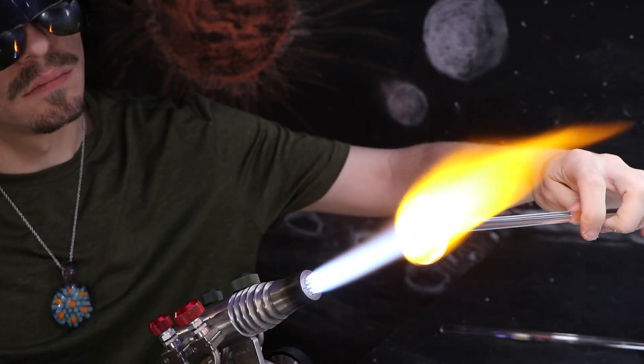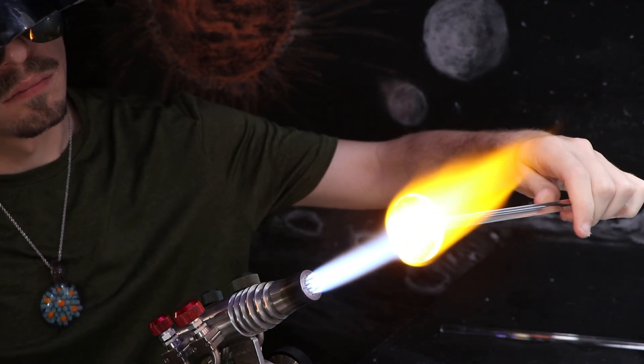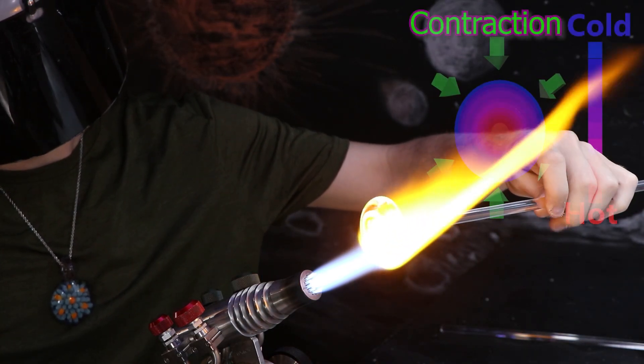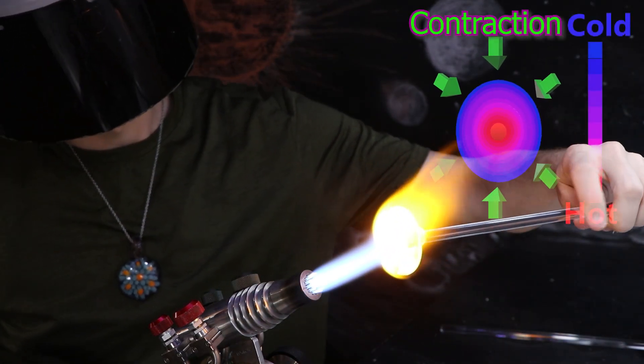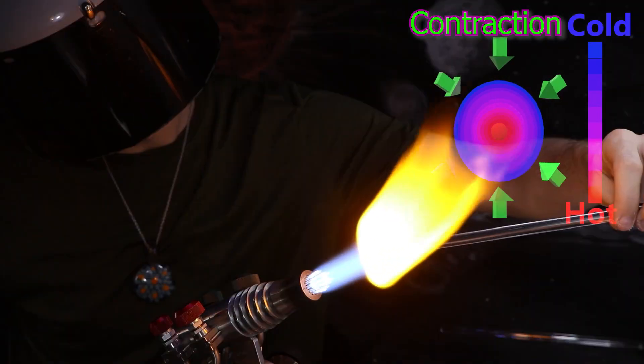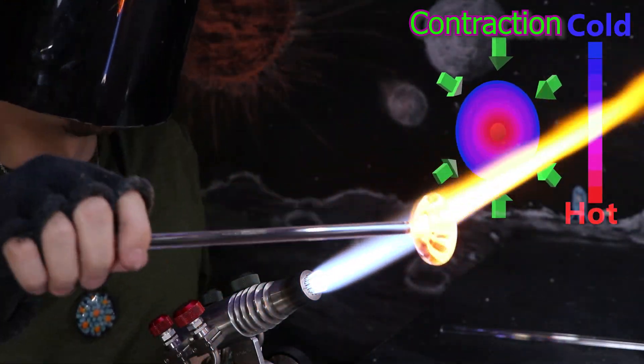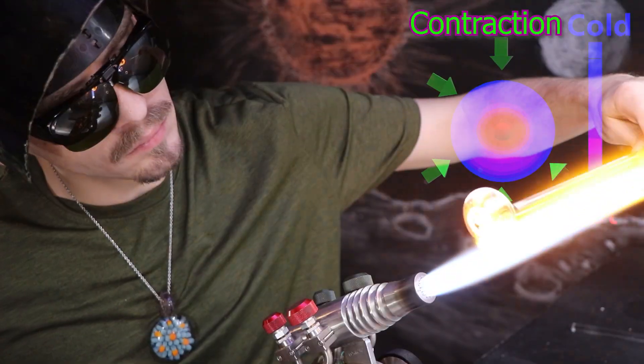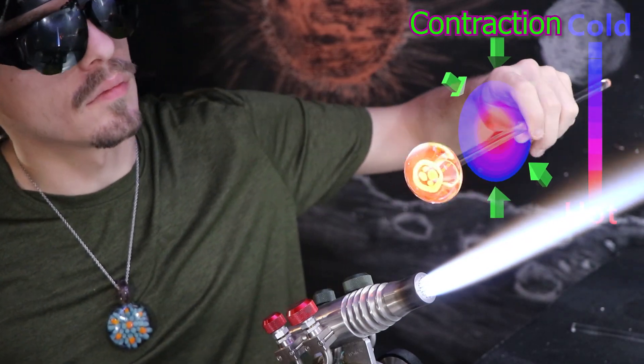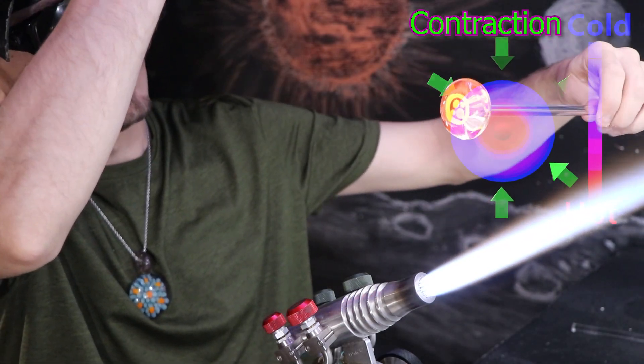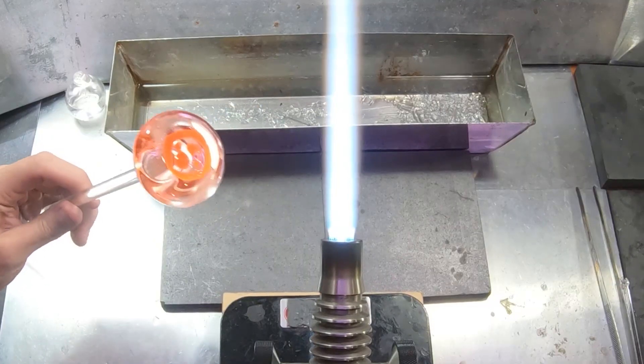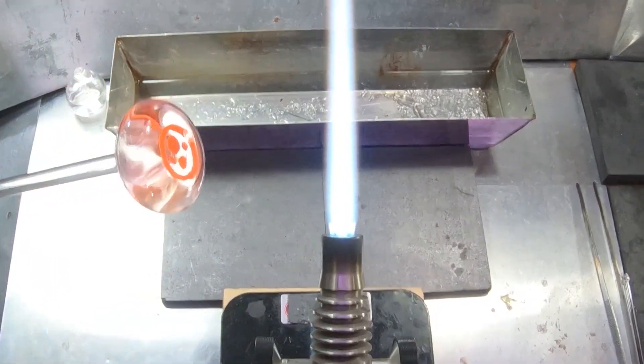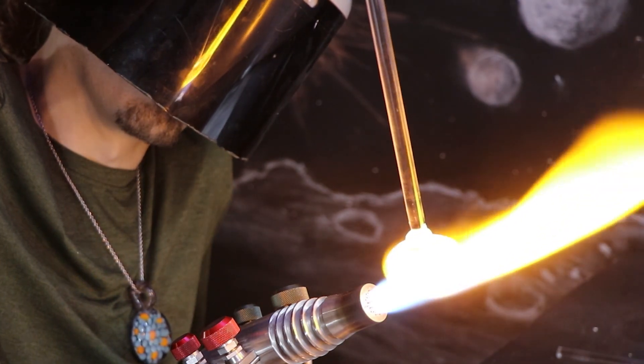As it begins to cool, we lose heat from the inside going outward. It starts to contract in on itself. But as those outer layers begin to rapidly cool and solidify, they start resisting that contractive force still happening in the hot core of the glass. This can begin to build up a lot of tension or stress, almost like a rubber band pulled out very tightly, ready to snap.